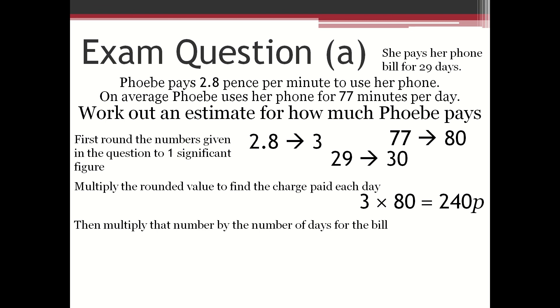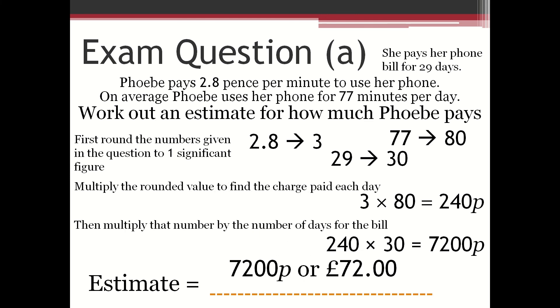Then multiply that number by the number of days for the bill. So 240 multiplied by 30 is 7200p. So the estimate is that Phoebe pays 7200 pence or 72 pounds for 30 days.